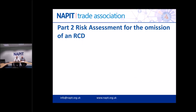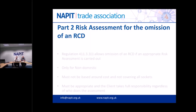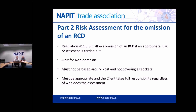Let's look at Regulation 411.3.3 - it allows omission of an RCD if an appropriate risk assessment is carried out, but note that applies to anything other than a dwelling. For a dwelling, any socket outlet requires 30mA RCD protection - there's no question, and we can't even have a specific label anymore in the 18th edition. For other premises, the risk assessment must be carried out with the client, who takes responsibility for it and needs to be aware the assessment may need updating if the building changes its use.